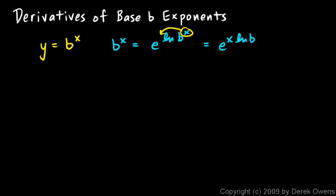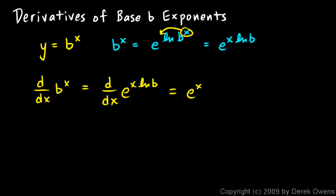This is a function we know how to differentiate, so let's do it. The derivative with respect to x of b^x equals the derivative with respect to x of e^(x·ln b), since those are the same thing. We differentiate using the chain rule: the derivative of e to that power is e to that power, times the derivative of the inner function x·ln(b). Since ln(b) is just a constant, the derivative of x·ln(b) is simply ln(b).